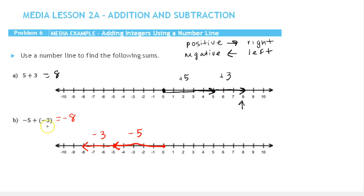Since they're both negative, we have negative 5 and negative 3. All of those movements are accumulating, and we end up going a total of 8 in the negative direction. So you can think of adding the numbers 5 and 3 to get 8, and since they're both negative, they accumulate in the negative direction.